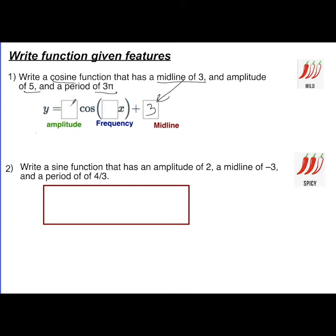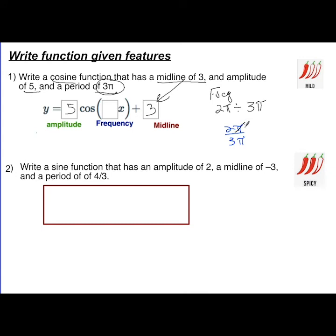Filling in what we know: midline is three, so we put three there. Amplitude is five, so that goes in front. For the frequency, we take two pi divided by the period, which is three pi. That gives us two pi over three pi. The pi's cancel, so the final frequency is two thirds.